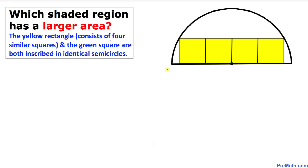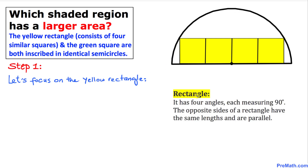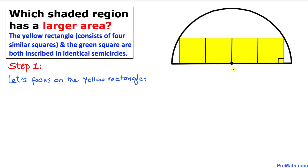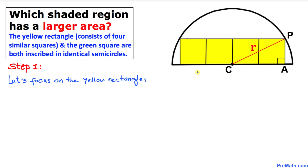Let's go ahead and get started. We are going to focus on this yellow rectangle first. By definition, a rectangle has all four angles measuring 90 degrees, so this angle is going to be 90 degrees. Let me call the center of this semicircle C, this point P, and this point A. This is the radius, which I'm going to call r.